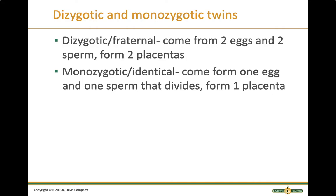Dizygotic, or fraternal, twins come from two eggs and two sperm — two separate eggs are fertilized by two separate sperm, forming two separate placentas. These commonly result from in vitro fertilization. Monozygotic, or identical, twins come from one egg and one sperm — the zygote forms and then divides. They're held together by the zona pellucida, so they usually form and share one placenta.